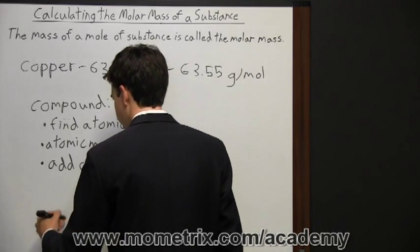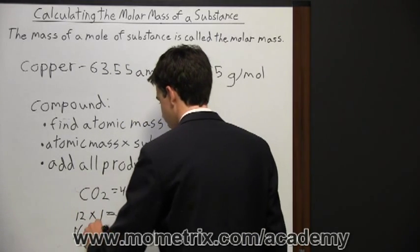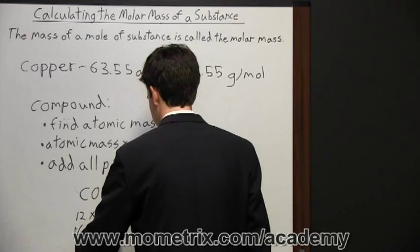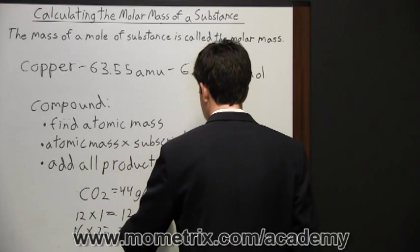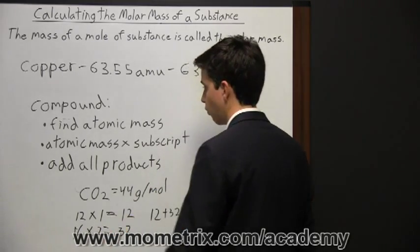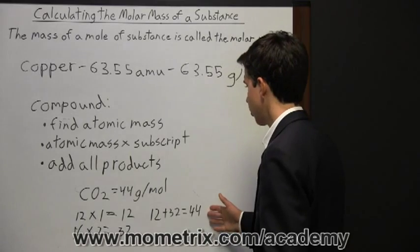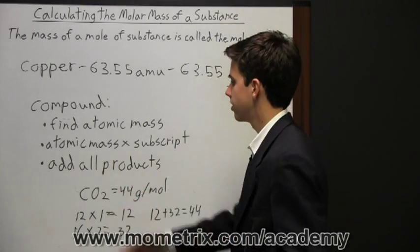Then you do the same thing with oxygen. You'd find that its atomic mass is 16. You would multiply it by its subscript of 2, which is 32. Then finally you add all products. So 12 plus 32 is 44. So that's the total molar mass of the compound CO2.